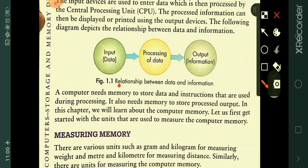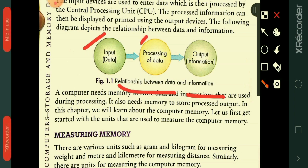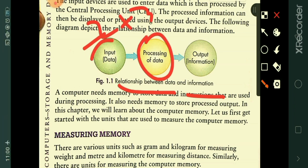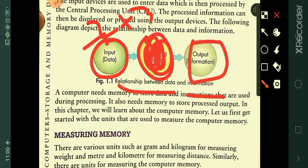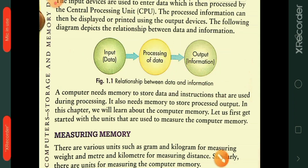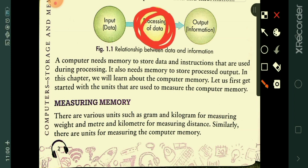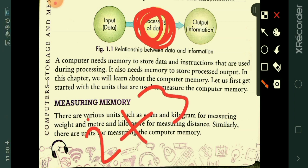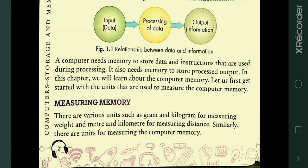The relationship between data and information: the data you enter through an input device such as a keyboard is processed — for example, 2 plus 3 — and the result is displayed as 5 through the output device. A computer also needs memory to store data and instructions used during processing. For example, 2 and 3 are the data, and plus is the instruction.